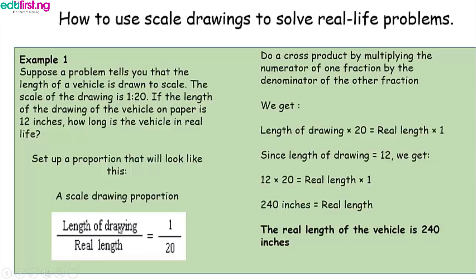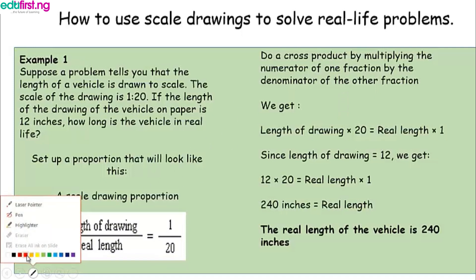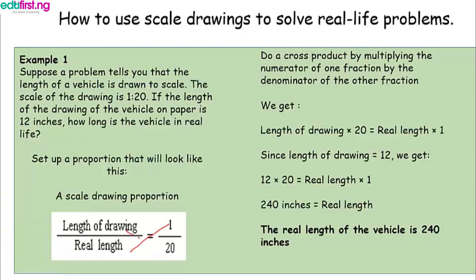A scale drawing proportion is always: length of drawing over real length. The length of drawing refers to the representation on paper, which was given as 12 inches. This equals the scale of the drawing, which was given as 1 to 20, or 1 over 20. We then cross multiply — multiplying the length of the drawing by 20 and the real length by 1.